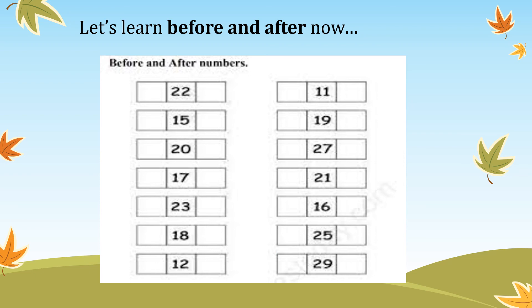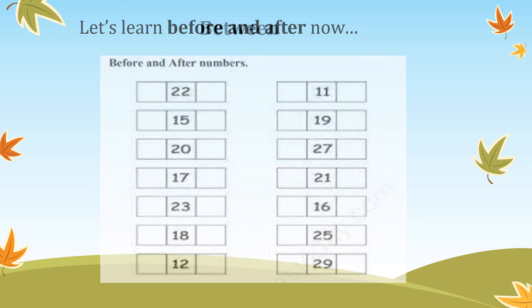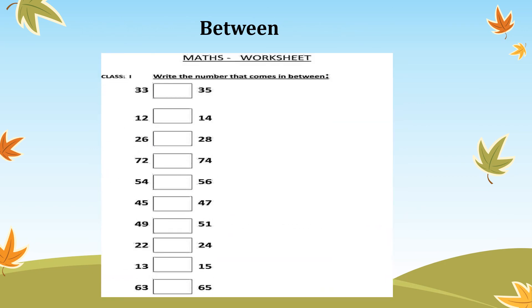Let's move on to what we have for between. Write the numbers that come in between. For example, between 33 and 35 — add 1 to 33, you will get 34. So 34 is the number in between 33 and 35.